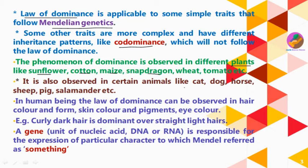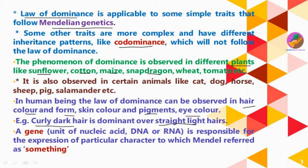Not only plants, but some animals like cat, dog, horse, sheep, pig, and salamander also follow the Law of Dominance. In human beings, the Law of Dominance can also be observed in characters such as hair color, hair form, skin color, skin pigmentation, and eye color. For example, curly dark hair is a dominant character over straight light hair — curly dark hair will always be expressed in the F1 generation by masking the expression of straight and light hair.